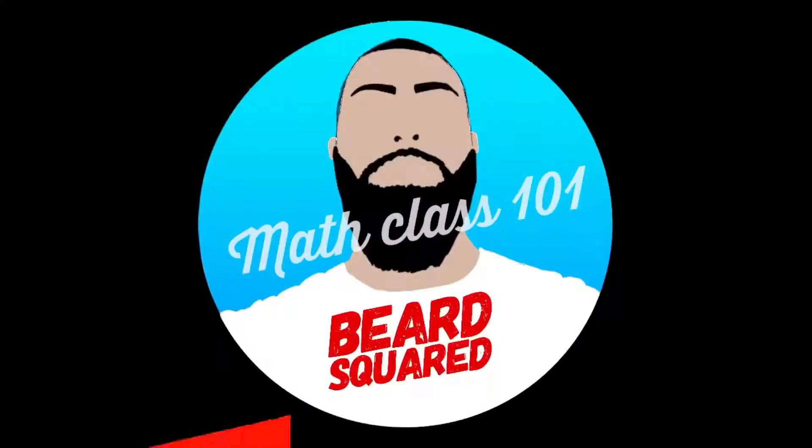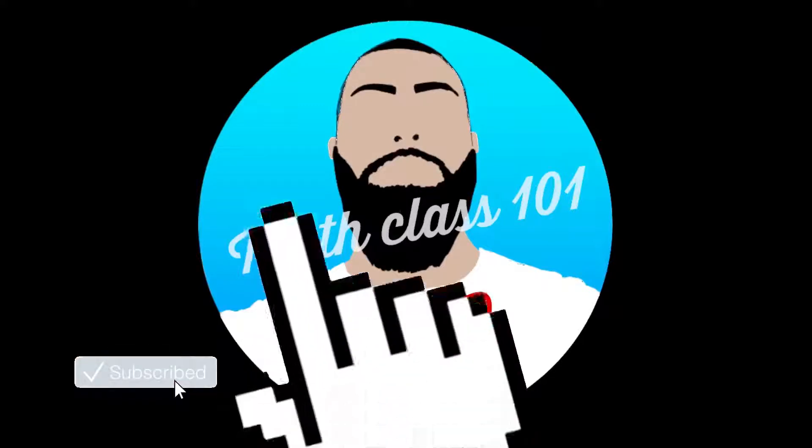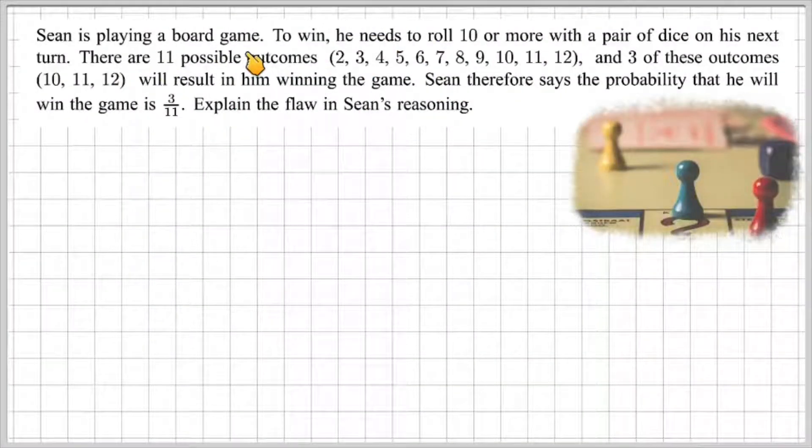Okay, stick around for the next question. It's a tough one, but I'm going to show you how to solve it. It says, Sean is playing a board game. To win, he needs to roll a 10 or more with a pair of dice on his next turn.